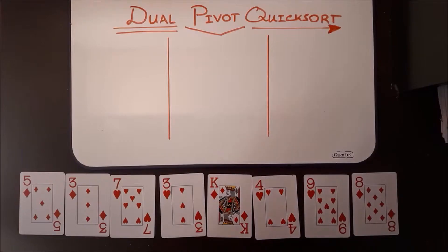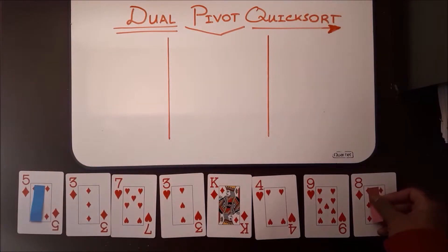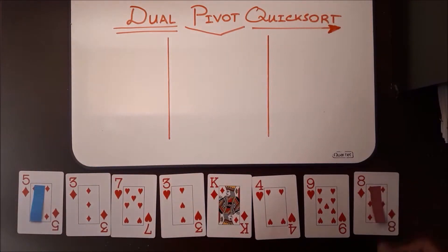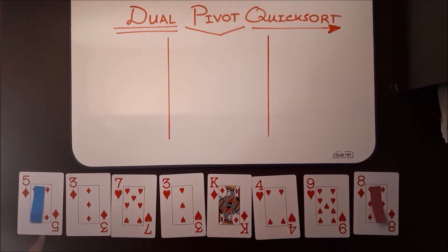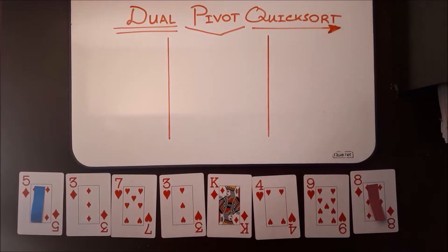Alright, so the first step is to identify your left pivot and your right pivot. It's gonna be the first element and the very last. One thing you have to make sure is that your left pivot, or your first element, is less than your right pivot, your last element. If they aren't, you're gonna have to switch them. But in our case, we're lucky — we have five and eight.